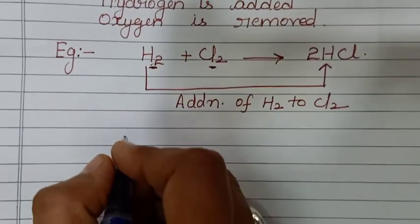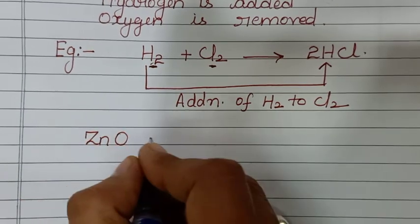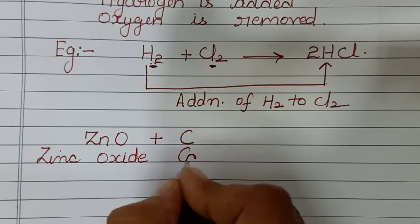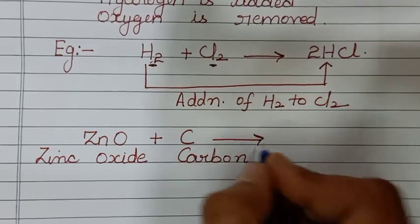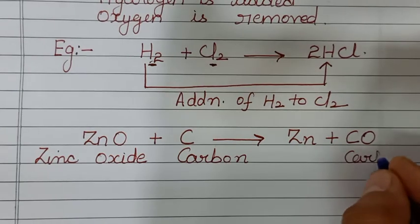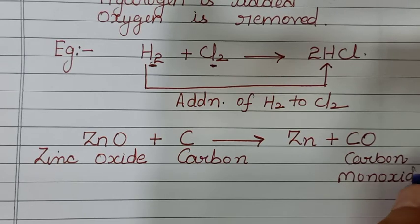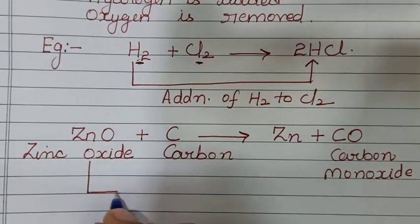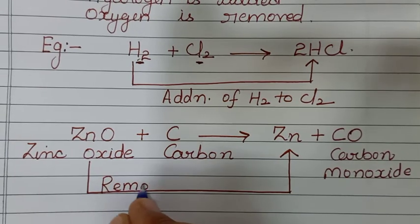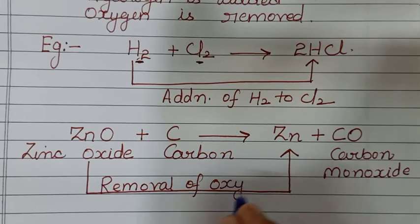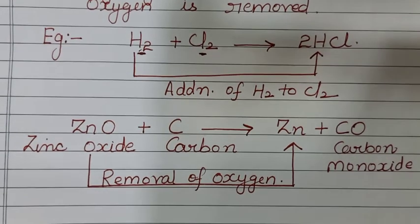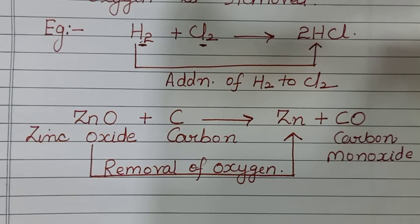Another example showing loss of oxygen: ZnO — zinc oxide — plus carbon gives Zn plus CO (carbon monoxide). Zinc oxide had oxygen but the product Zn has no oxygen — removal of oxygen occurred. Removal of oxygen means reduction.